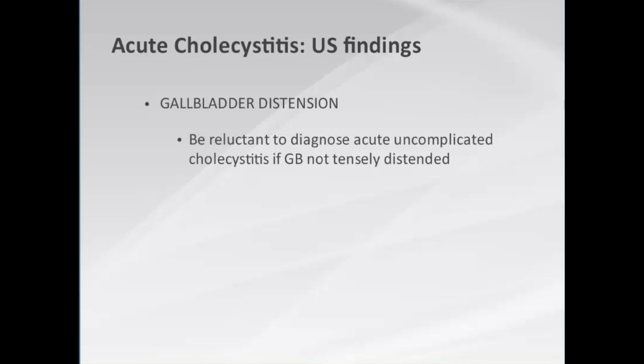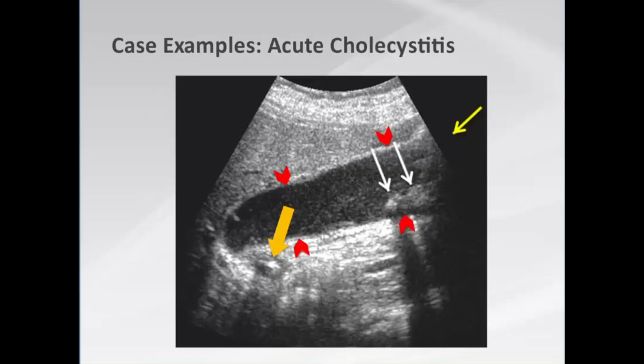Here is a teaching pearl: be very reluctant to diagnose acute uncomplicated cholecystitis if the gallbladder is not tensely distended. A woman in her late 30s with right upper quadrant pain for approximately 22 hours shows gallstones and maximal tenderness over the sonographically localized gallbladder — a positive predictive value greater than 90% for acute cholecystitis. Note also that this gallbladder is tensely distended, though the wall is not thickened and there is no pericholecystic fluid.